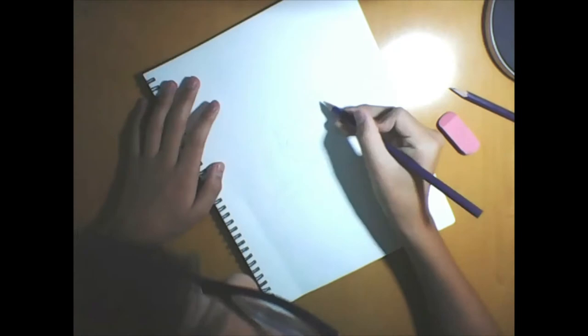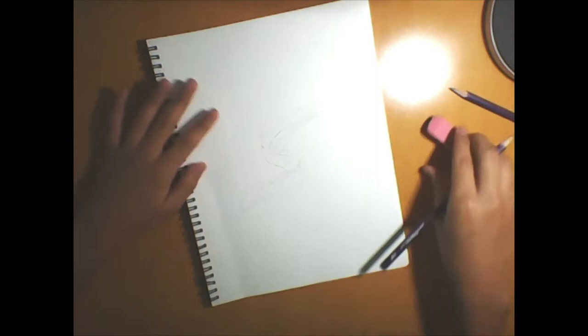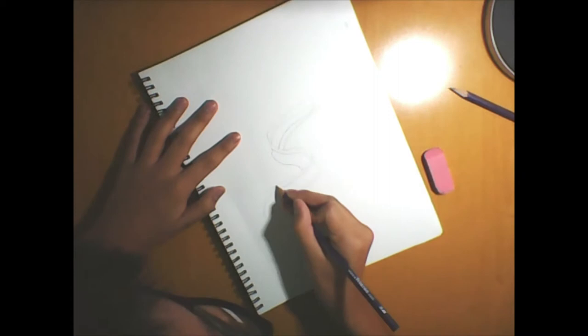Now, here add the little flap at the end and make it go around like this. Erase that. Now, we are going to make this a little more slanted downward.